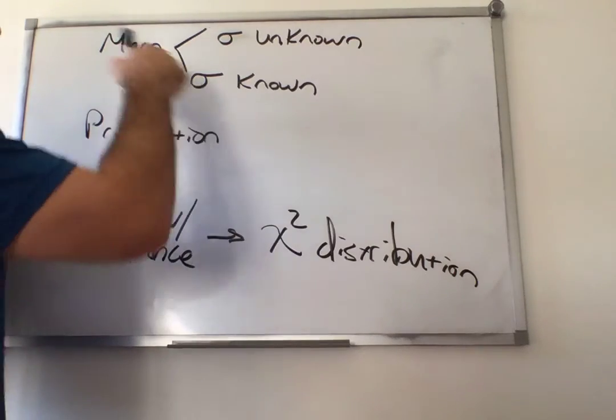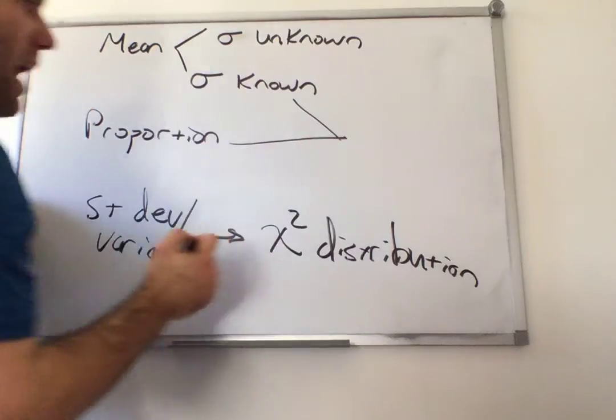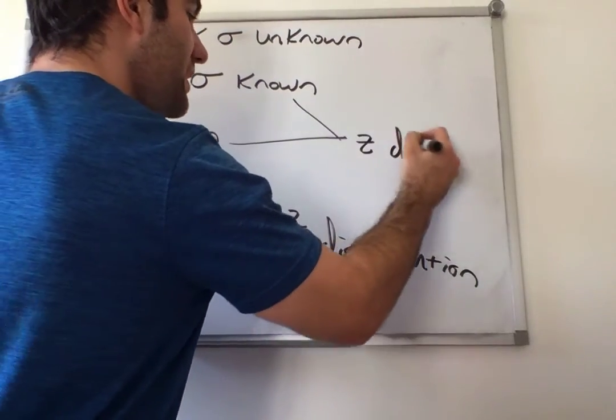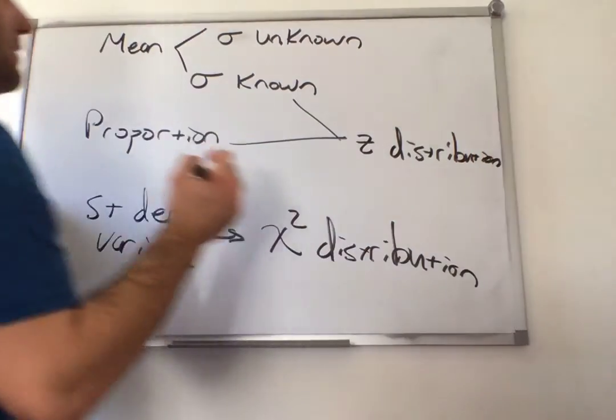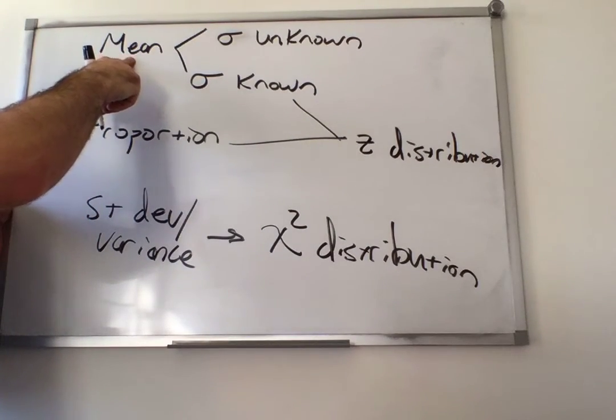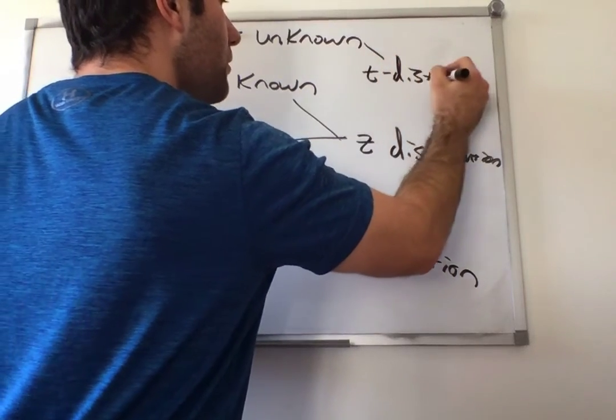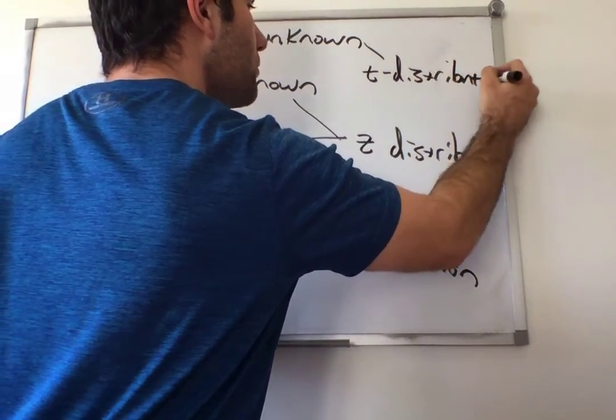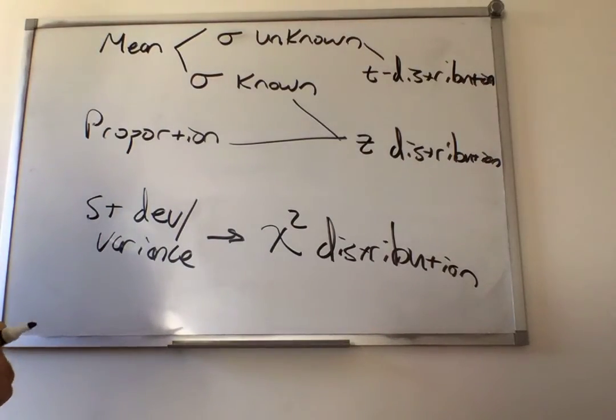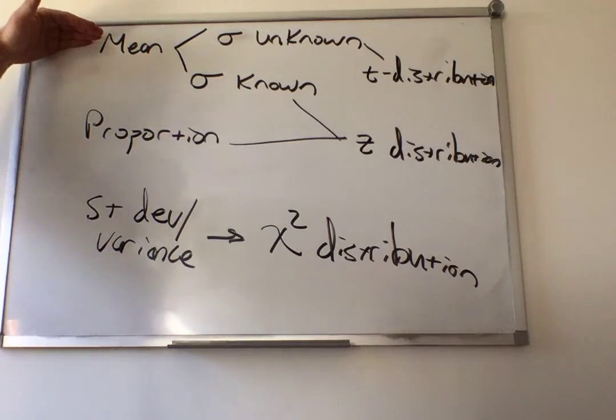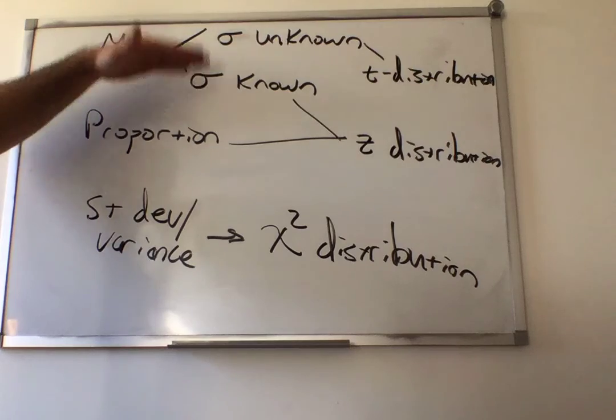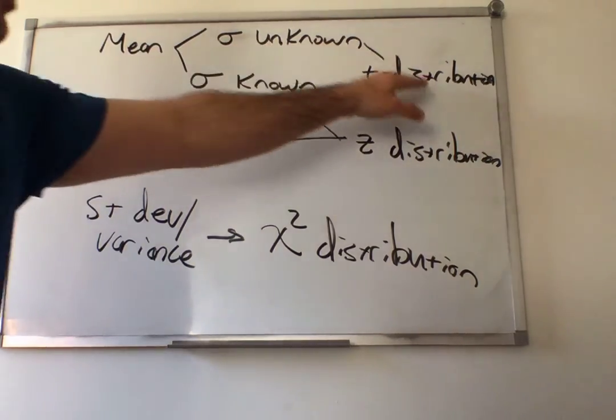If you're dealing with a proportion, or a mean and you know sigma, you know the population standard deviation, you're going to use the z-distribution. Now, if you're making a confidence interval for the mean and you don't know your population standard deviation, then you're going to use the t-distribution. So a nice little web diagram showing you what distribution you should use. This tells you how to get your critical numbers to compute your error formulas. If you're dealing with a mean, you should ask yourself, do you know the population standard deviation or do you not know it? If you know it, use z-distribution. If you don't know it, use t-distribution.